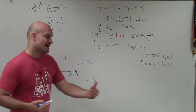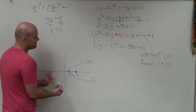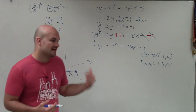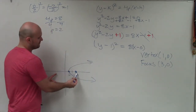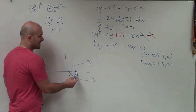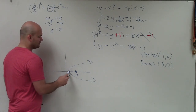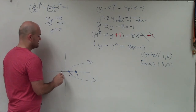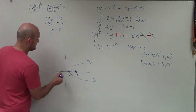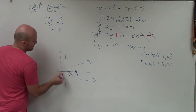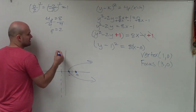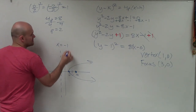To find the directrix, remember the definition of a parabola: the distance from any point to the directrix equals the distance to the focus. So if I went over 2 units to the right to reach my focus, I go 2 units to the left to reach my directrix. The directrix is not a point — it is a line perpendicular to the axis of symmetry. Since this is a vertical line, it's going to be x equals negative 1.